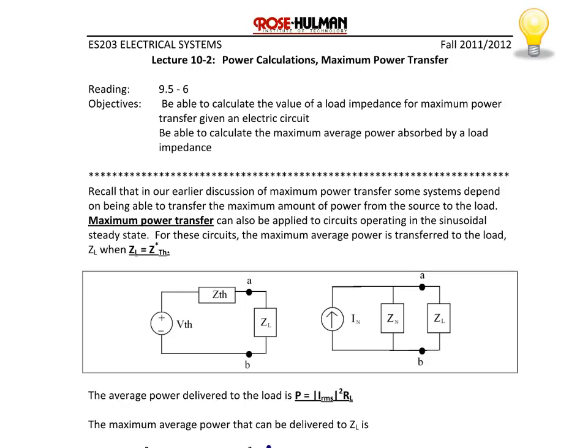Recall that in our earlier discussion of maximum power transfer, some systems depend on being able to transfer the maximum amount of power from the source to the load. We do this with Thevenin and Norton equivalents, modeling the circuit as either a voltage source in series with an impedance or a current source in parallel with an impedance, because what we're most interested in are the terminal characteristics such as the voltage, current, or power at the load. Maximum power transfer can be applied to circuits operating in the sinusoidal steady state. For these circuits, the maximum average power is transferred to the load when the load impedance is equal to the conjugate of the Thevenin impedance. It is important not to forget it's the conjugate.